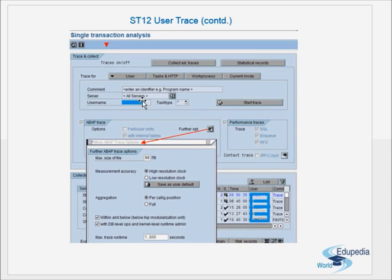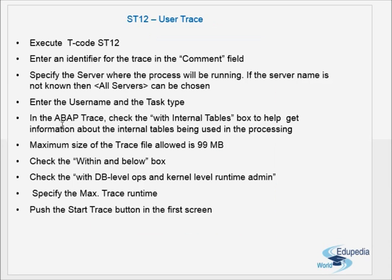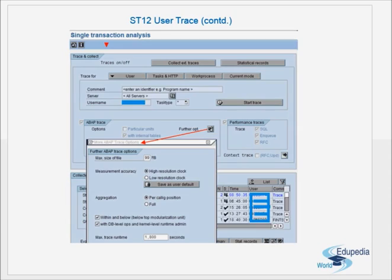If the server name is not known, then all servers can be chosen. Specify which instance it is running on — it can be a dialogue or a background process. If we are not sure, we can give all servers. Then enter the user name in the task type field.